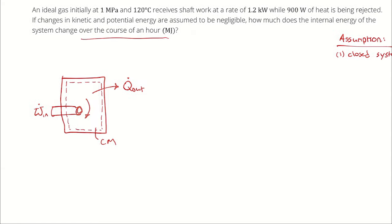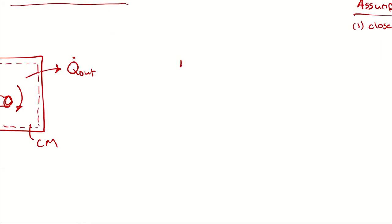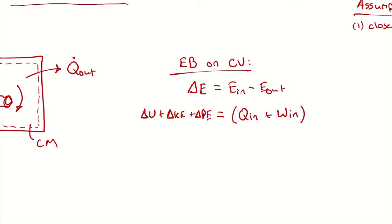With my system defined, I can perform an energy balance. I will start by saying that the change in energy of our system is going to equal the energy entering minus the energy exiting. Because it's a transient process, the left-hand side matters. I have delta u, delta ke, and delta pe as possibilities. On the right-hand side, we have heat transfer and work as the two opportunities for energy to cross the boundary of a closed system.